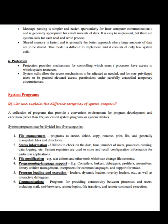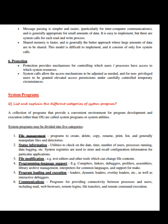Message passing is simpler and easier, particularly for inter-computer communication, and is generally appropriate for small amounts of data — easy to implement, but there are system calls for each read and write. Shared memory is faster and is generally the better approach for large amounts of data, but it is more difficult to implement and consists of only a few system calls. Protection provides a mechanism for controlling which users or processes have access to which system resources. System calls allow access mechanisms to be adjusted as needed and for non-privileged users to be granted elevated access permissions under carefully controlled temporary circumstances.